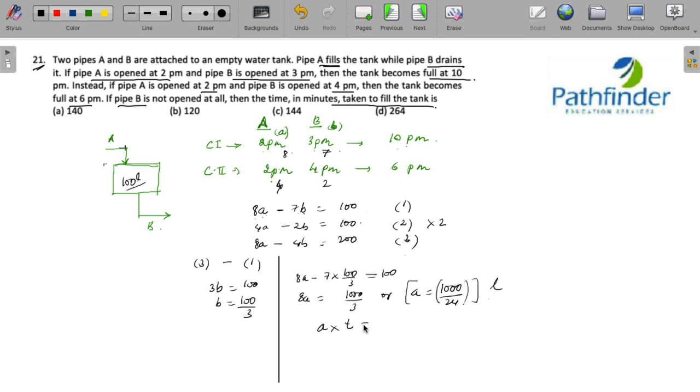So 1000 by 24 multiplied by time equals 100. Therefore T is 2.4 hours, and if you convert this into minutes, you get 144 minutes, which is your answer.